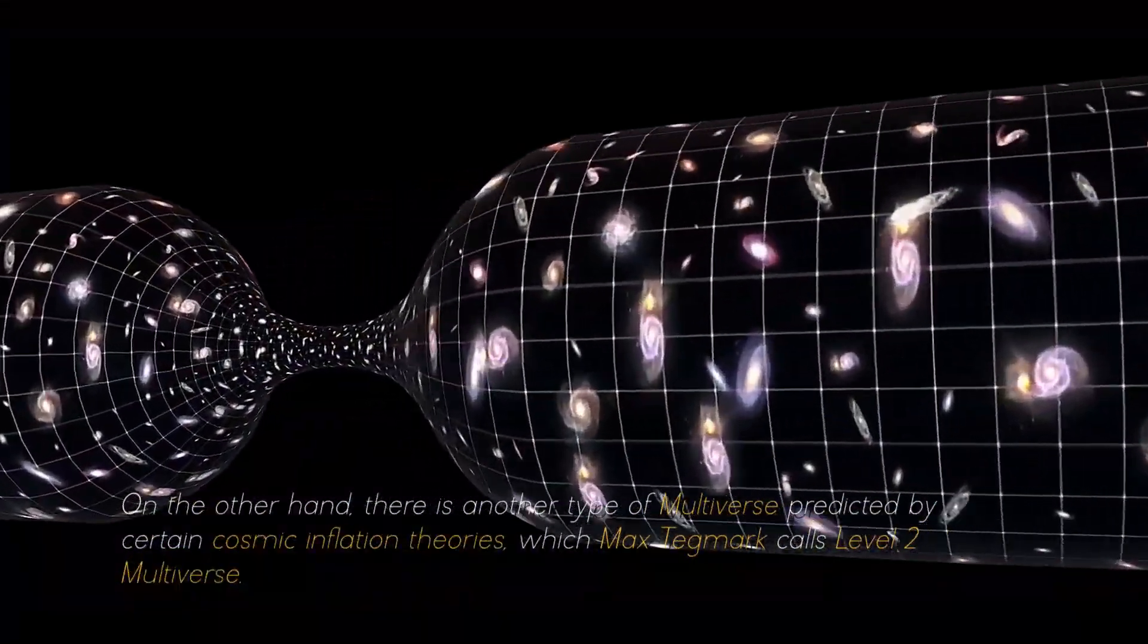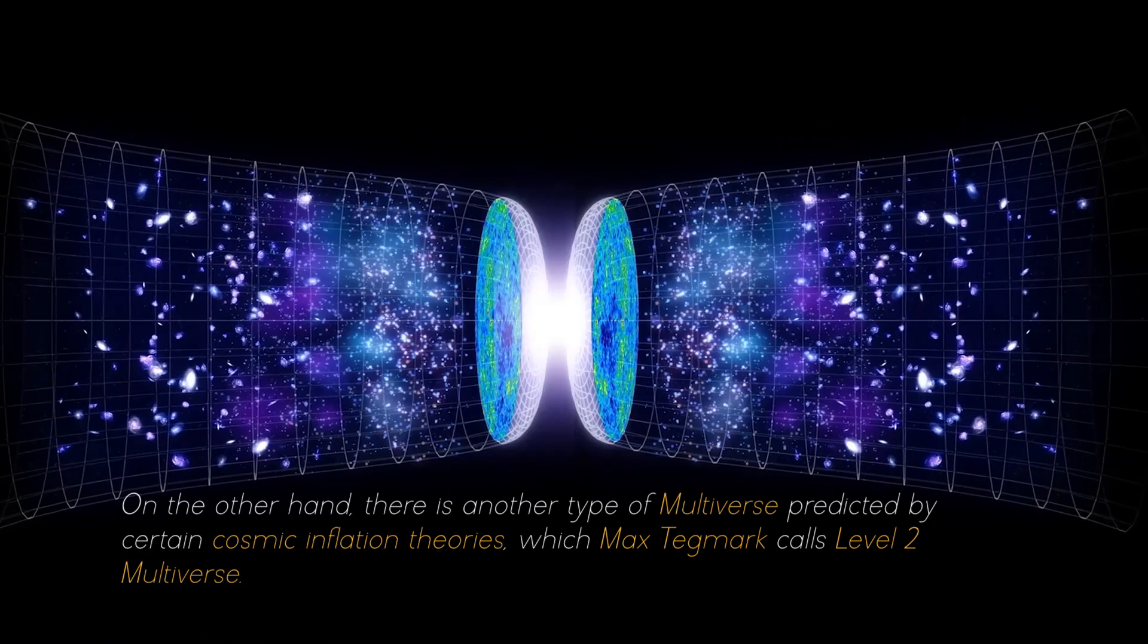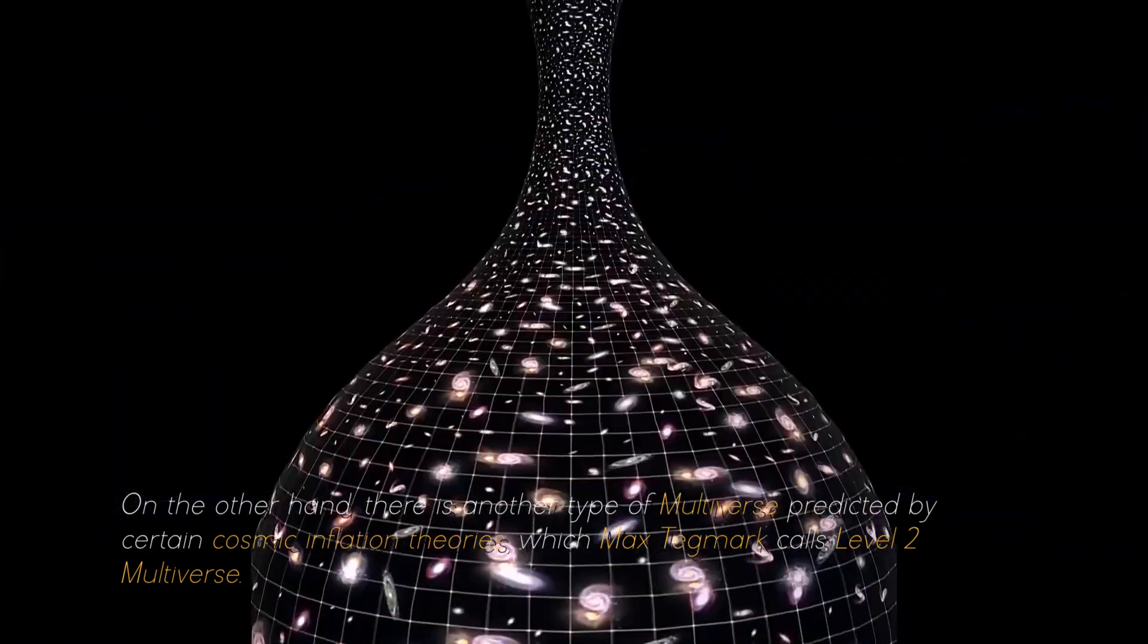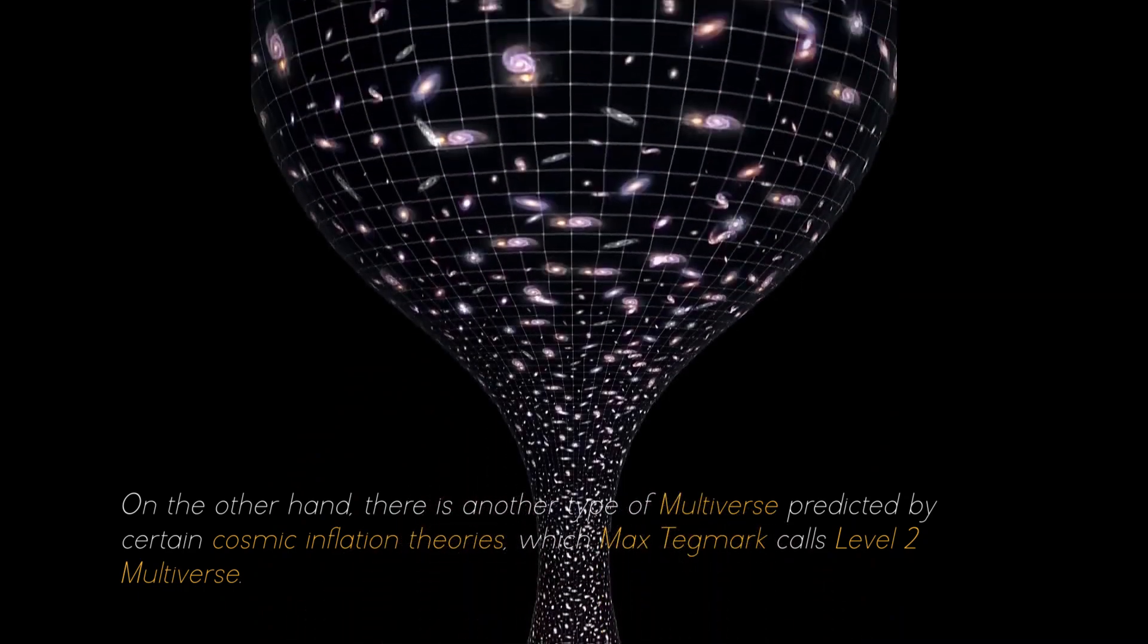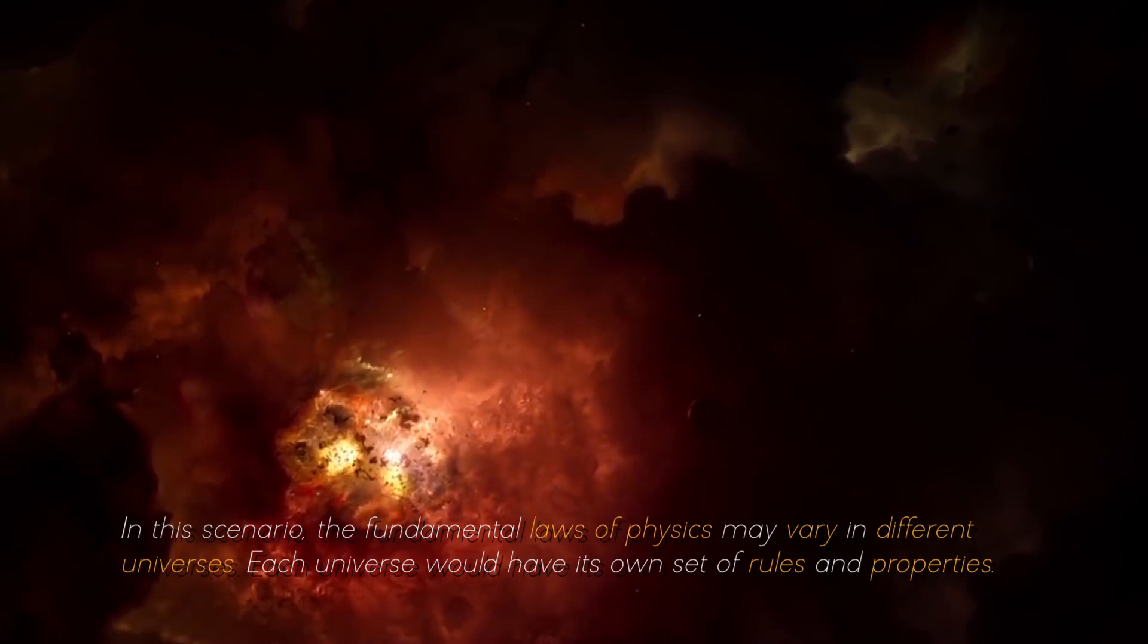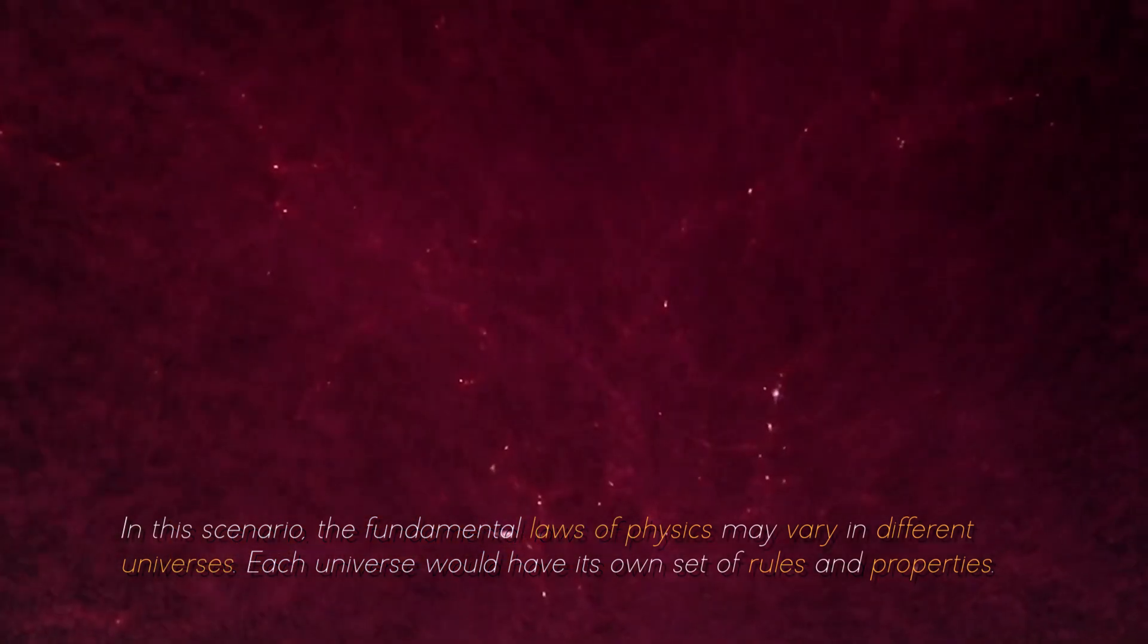On the other hand, there is another type of multiverse predicted by certain cosmic inflation theories, which Max Tegmark calls the level 2 multiverse. In this scenario, the fundamental laws of physics may vary in different universes. Each universe would have its own set of rules and properties.